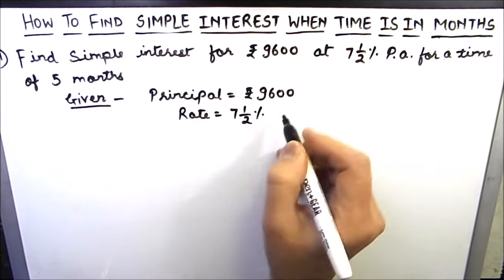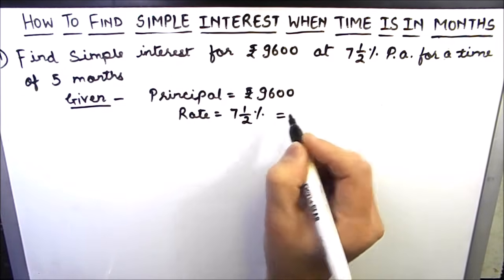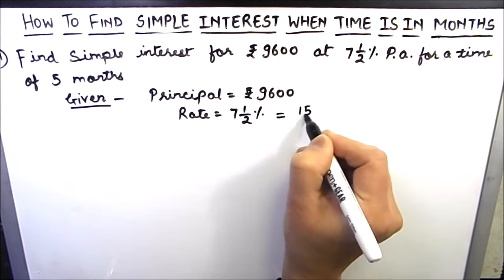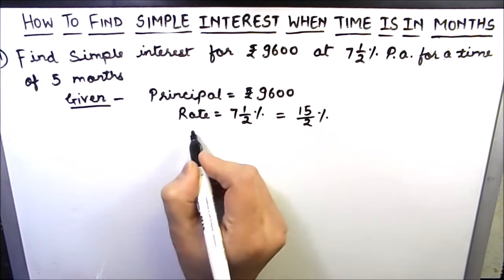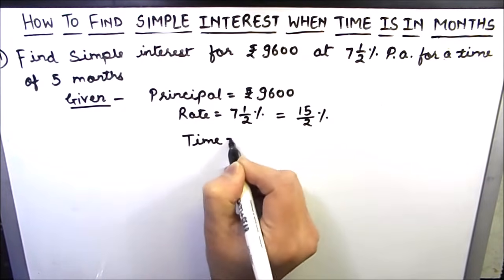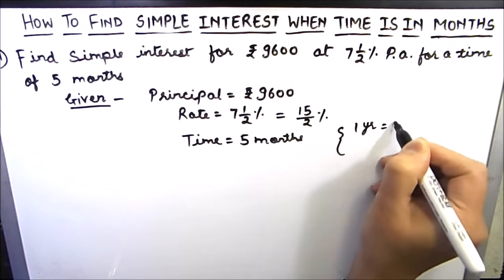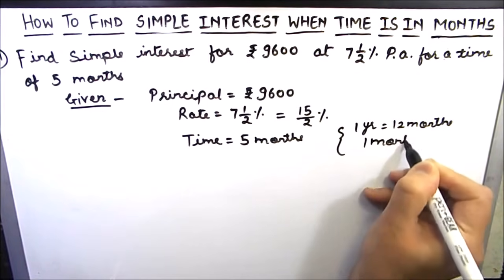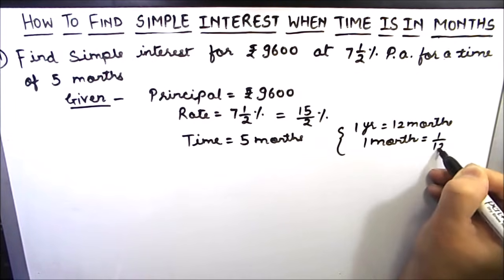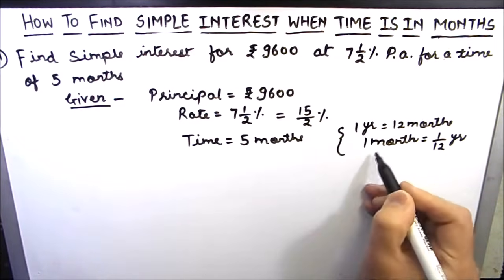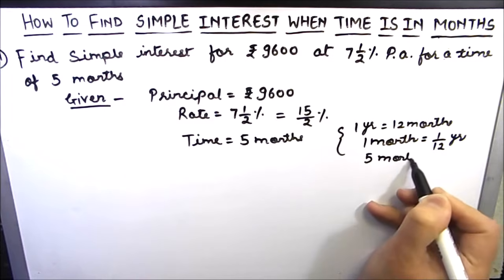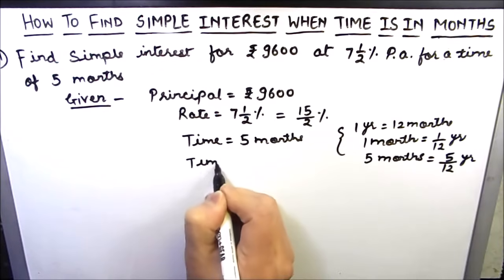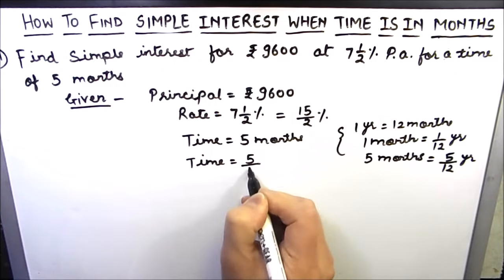Rate of interest is 7 and a half percent per annum. This is a mixed fraction; let us convert it into an improper fraction. So this will be 15 divided by 2 percent. The time period is given as 5 months. We know that 1 year is 12 months, so 5 months will be 5 by 12 years. Time in years will be 5 by 12 years.